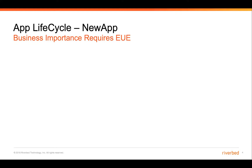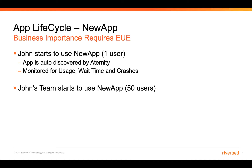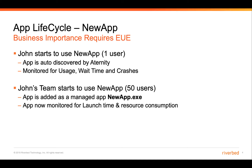Let's take an example of how this is going to be used in real life. Say there's an application called NewApp that's just been released to the market, and John starts to use that application with Anywhere Enterprise. NewApp now has one user. That application will automatically be discovered by Eternity, and it will be monitored for its usage, wait time, and crashes. John's team starts to use NewApp because it's working really well and providing a lot of value, so you can look at the usage within Eternity and decide to add it as a managed app — adding newapp.exe to the managed app list. At that point, Eternity is going to be able to monitor the launch time for NewApp and all the resource consumption.